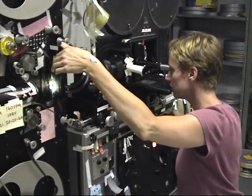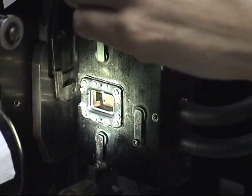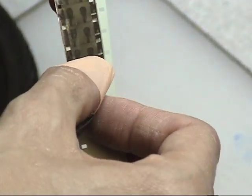An optical printer is a film camera that is used to re-photograph old or damaged film frame by frame. This film is old, the one that I'm going to have to reproduce.